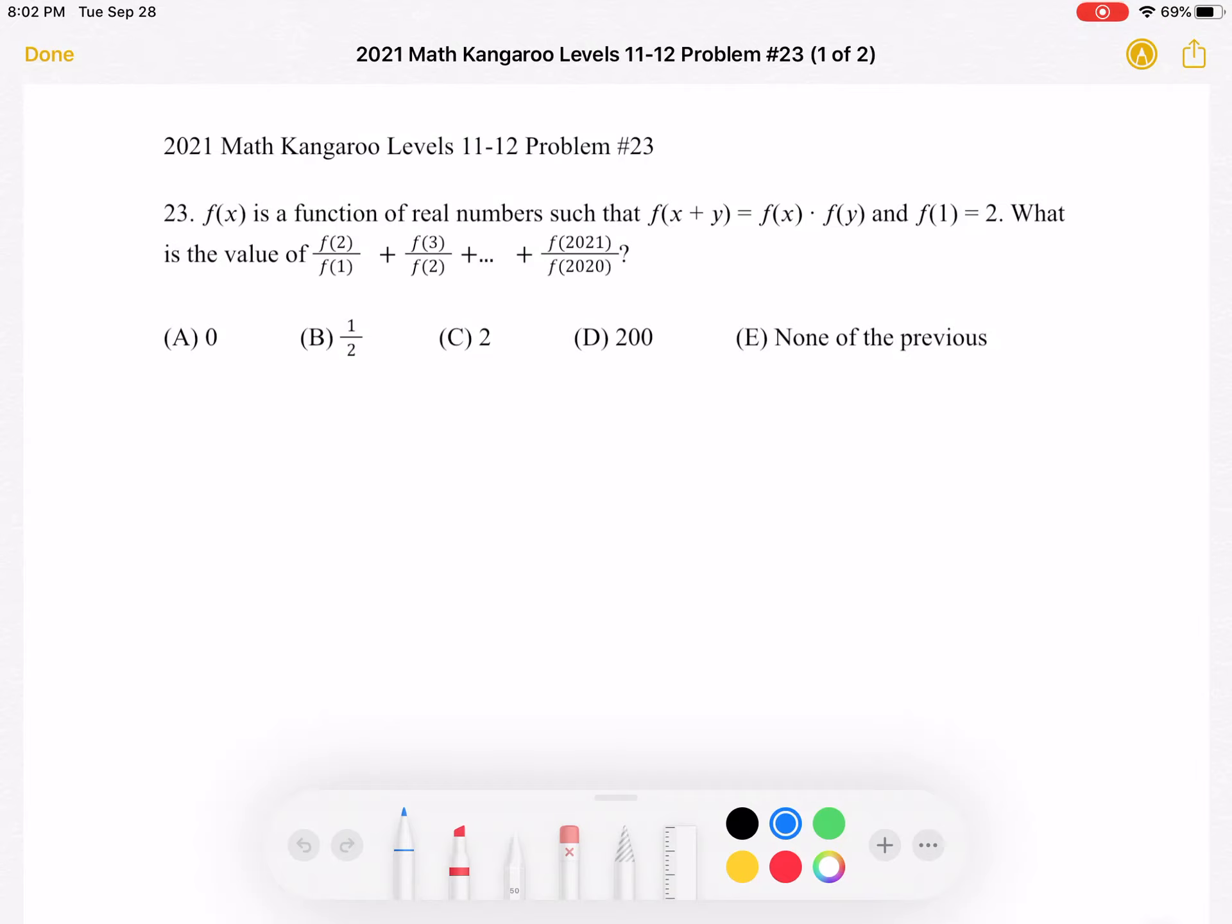What is the value of f(2) divided by f(1) plus f(3) divided by f(2), and so on, until we have f(2021) divided by f(2020)?